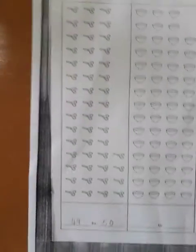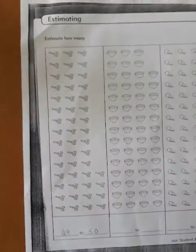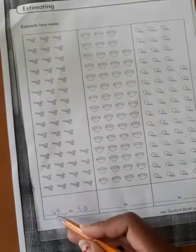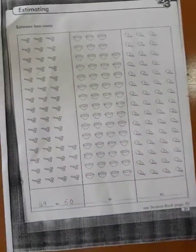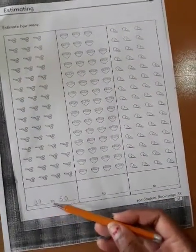So here we have estimated. We have counted how many. We found 49. Then after that, we have estimated as an instruction. So here it's 49 to 50.